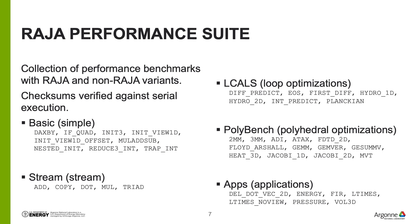The performance suite is broken into five basic groups. The first is Basic, which includes things such as DAXPY and initialization. The next is the Stream group, based on the classic stream benchmark. Next is the LCALS group, focused on loop optimization benchmarks — kernels which can benefit from a variety of difficult loop optimizations. Then there is Polybench, a well-known benchmark suite for kernels that can utilize polyhedral optimizations. Finally, there are some kernels pulled directly from applications.